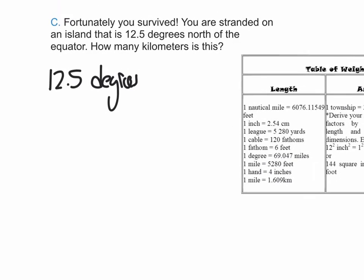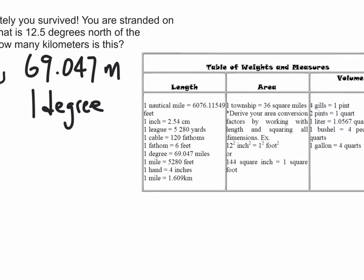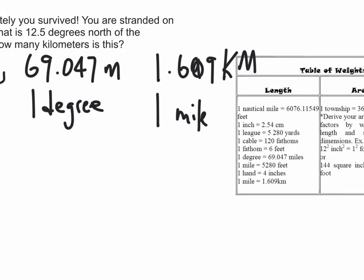Alright, so what's that going to look like? I see that we have 12.5 degrees, and I know that 1 degree, we just said, is equivalent to 69.047 miles. Great. And I know that when we're looking at miles, 1 mile is equivalent to 1.609 kilometers. Okay, so what happens next?